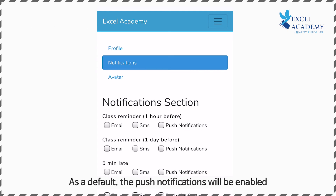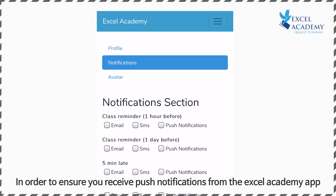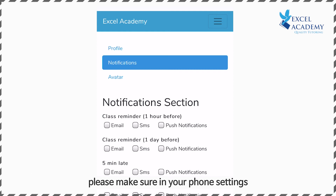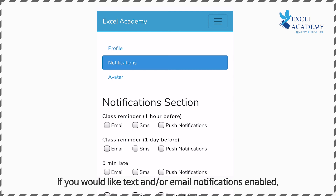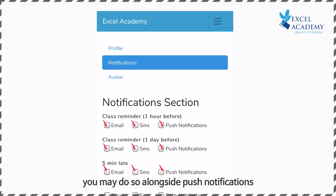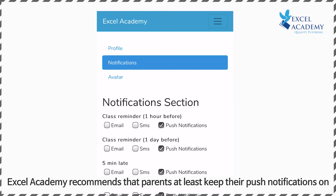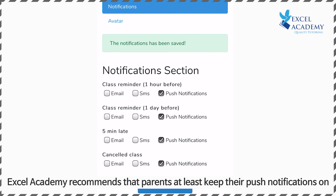As a default, push notifications will be enabled. In order to ensure you receive push notifications from the Excel Academy app, please make sure in your phone settings you have allowed the app to send you notifications. If you would like text and/or email notifications enabled, you may do so alongside the push notifications. Excel Academy recommends that parents at least keep their push notifications on.